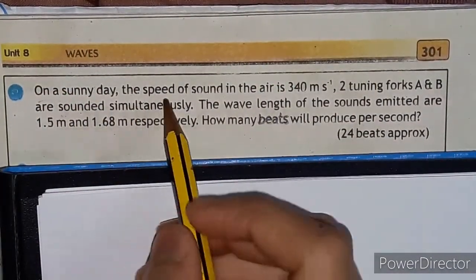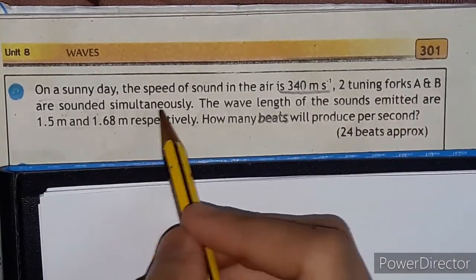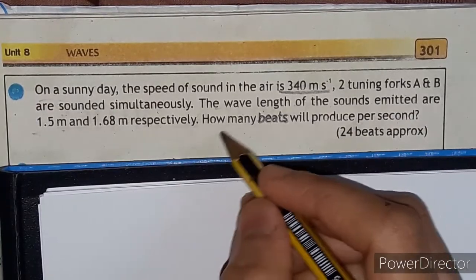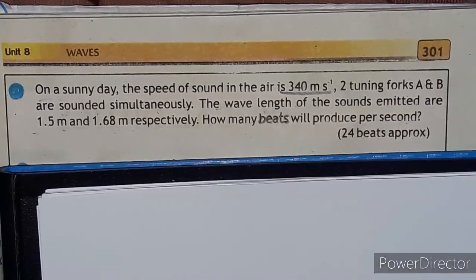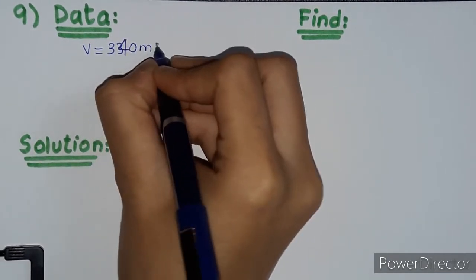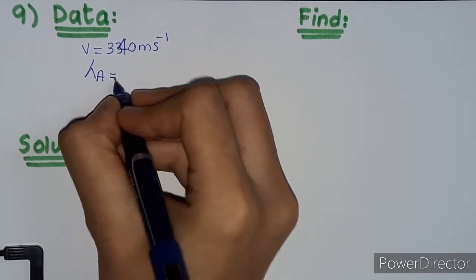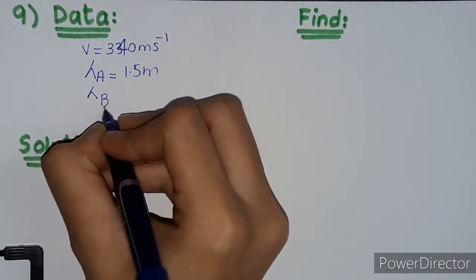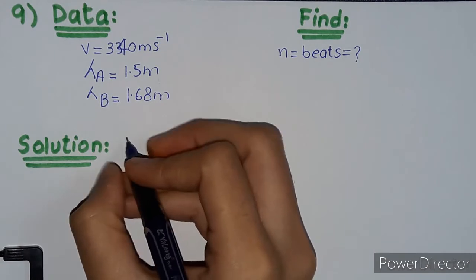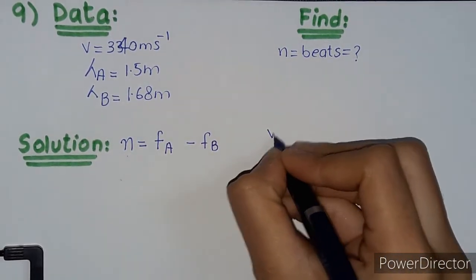Problem number nine: on a sunny day the speed of sound in air is 340 m/s. Two tuning forks A and B are sounded simultaneously. The wavelengths of the sounds emitted are 1.5 meters and 1.68 meters respectively. How many beats are produced per second? Data: speed v equals 340 m/s, wavelength of A is 1.5 m, wavelength of B is 1.68 m. Number of beats equals frequency of A minus frequency of B.